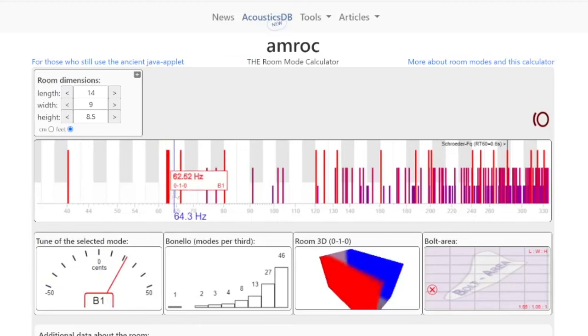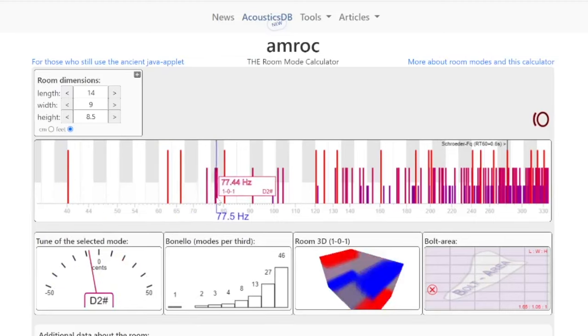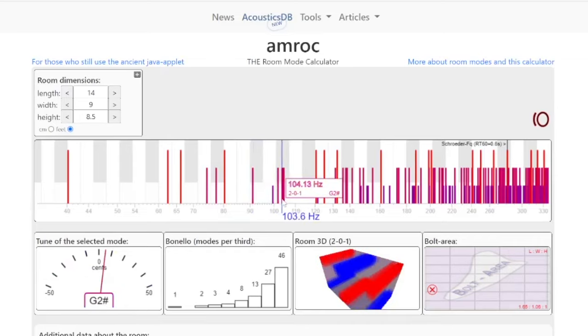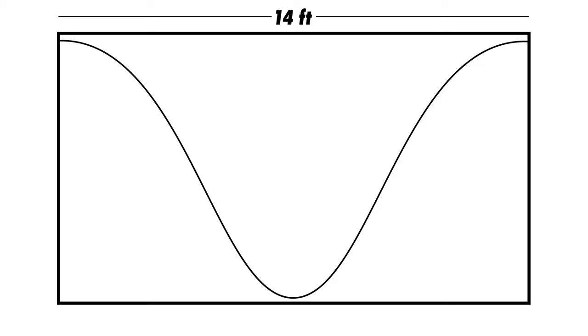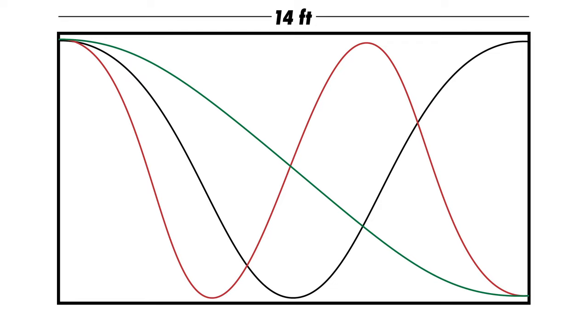The room modes in your listening space are directly related to the dimensions of your room. You can find a link to this room mode calculator in the description below. In this particular room, the distance between the front wall and the back wall is about 14 feet, which corresponds to the wavelength of an 80Hz sound wave.